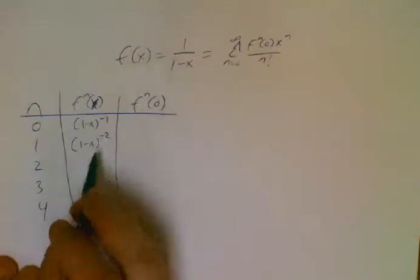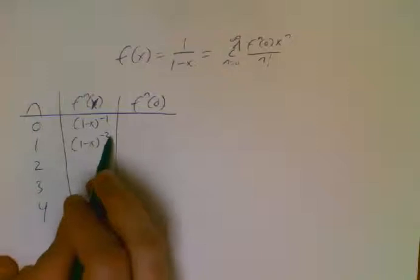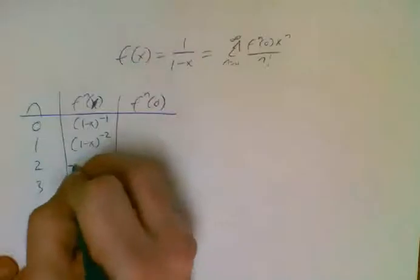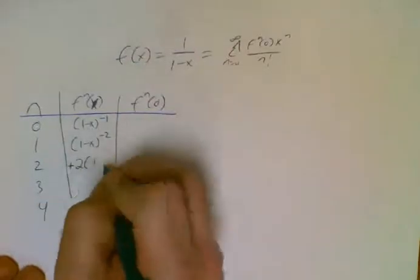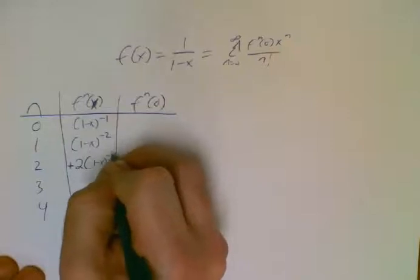Same thing. Negative 2, 1 minus x to the negative 3 with a negative 1 chain rule kicker is going to be positive 2, 1 minus x to the negative 3.